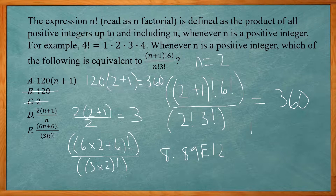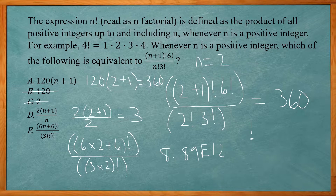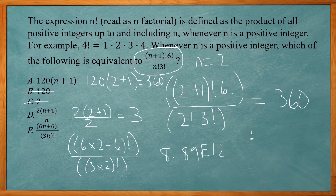If you don't know where your factorial button is on the TI-83 or 84, go to Math, then along the top go to PRB, and choice 4 will be your factorial. For any other calculator, check the manual. So in this example, we plugged in N equals 2 into the original question, got 360, and found which answer choice also gives 360.